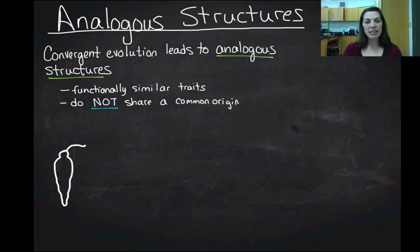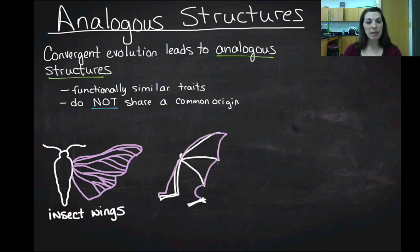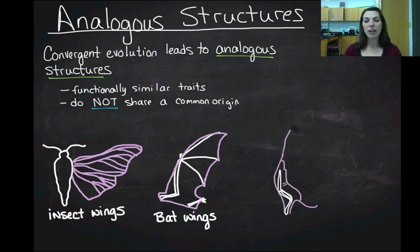So the easiest example of this is to look at wings. So here I have a wing of a butterfly, so insect wings, right? Well, we also see wings in some mammals, right? Bats, bat wings. And clearly, not all insects have wings and not all mammals have wings. So the common ancestor between insects and mammals did not have wings. Wings arose independently in insects and in bats. And obviously, it also evolved independently in birds.